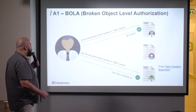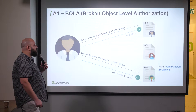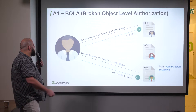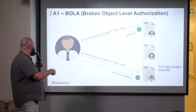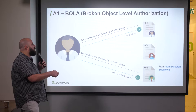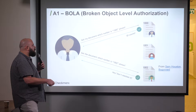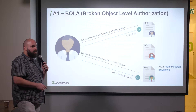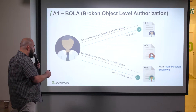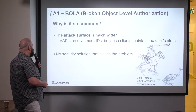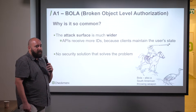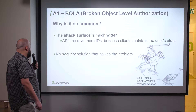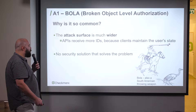What is Broken Object Level Authorization? Think about having several assets — like documents in your database — numbered 1000, 1001, 1002. Only one of them belongs to a specific user. If this user asks for document 1000, that's fine. But if the user asks for someone else's document and the server says 'here you go,' then you have broken object-level authorization — the user managed to be authorized to an object they shouldn't have access to. The attack surface is much wider in APIs than in traditional applications. APIs receive more IDs because clients maintain the user state, and there's no security solution that solves the problem unless you put it into your design.